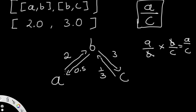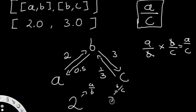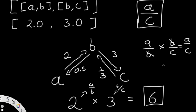We want to get from a to c. So first we go from a to b — that edge has a value of 2, representing a by b. Then we go from b to c, representing b by c, which equals 3. We multiply these two numbers, giving us a value of 6. And this value of 6 is going to be the value of a by c.